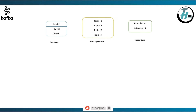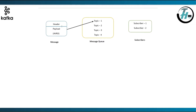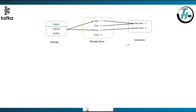Here I have taken two subscribers, subscriber 1 and subscriber 2. Suppose the message is sent to topic 1 and also topic 3. Subscriber 1 has subscribed to topic 1 and topic 2, while subscriber 2 has subscribed to topic 3. So subscriber 1 will receive message from topic 1 and subscriber 2 will receive message from topic 3.